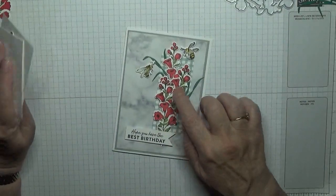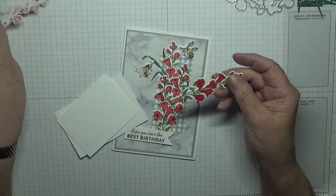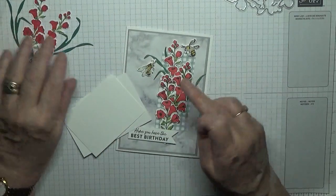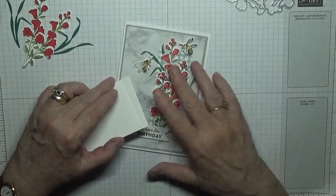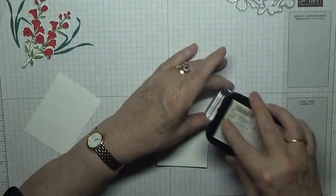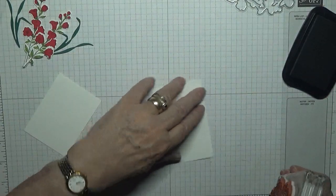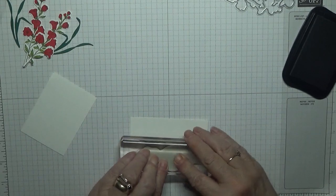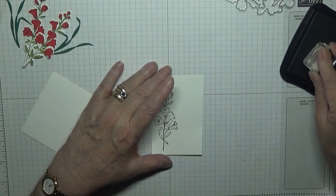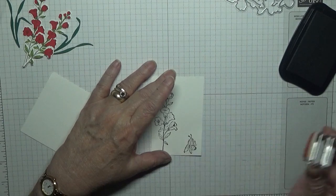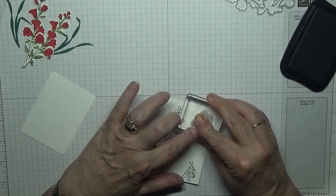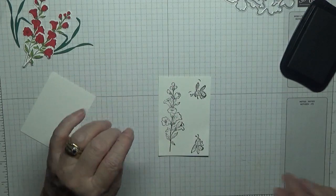Now I have stamped off two of these flowers. We do need three. Like I said I've cut the greenery out already. So we need to do another flower, the bees and the sentiment. So let's get started. This is the flower. One bee and two bees. Not worry about the over stamping because they are going to be cut out.